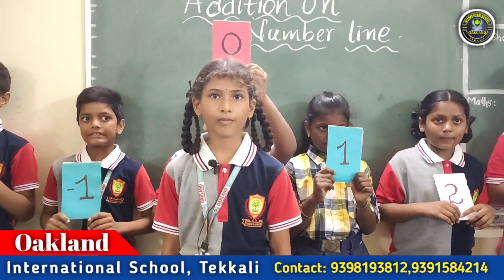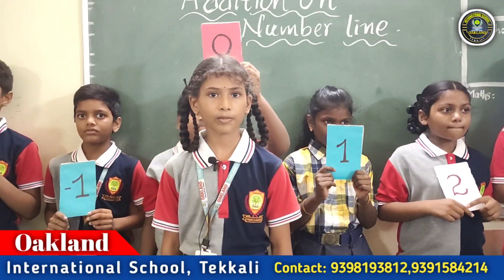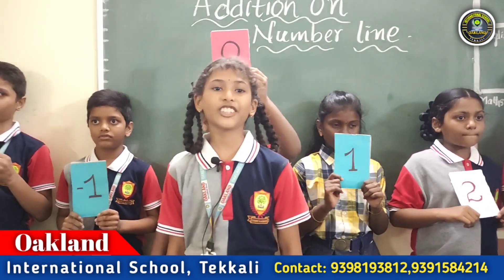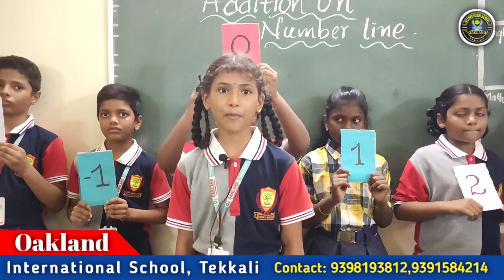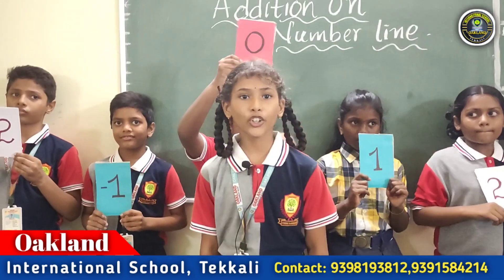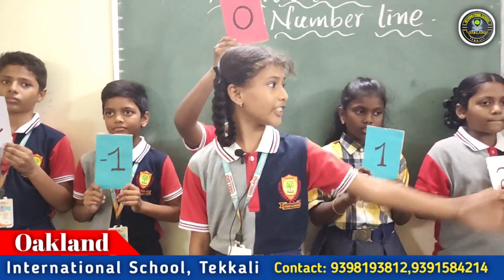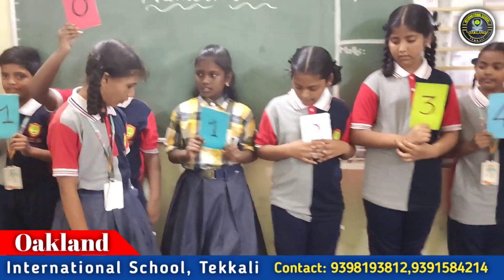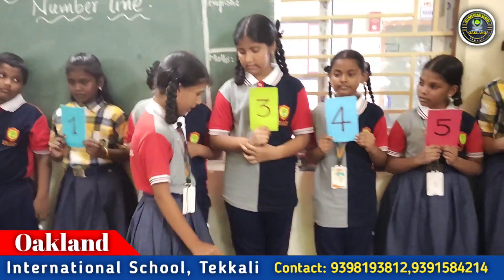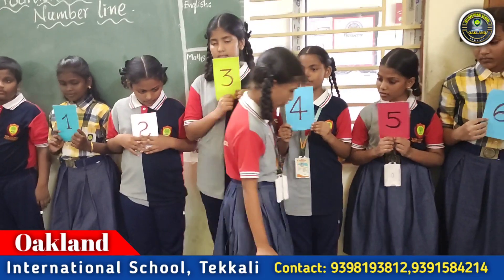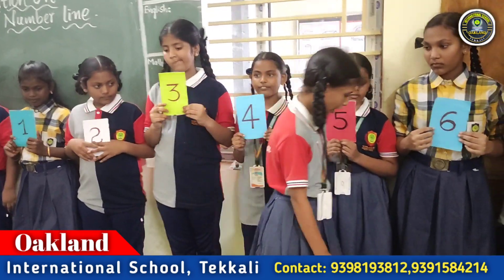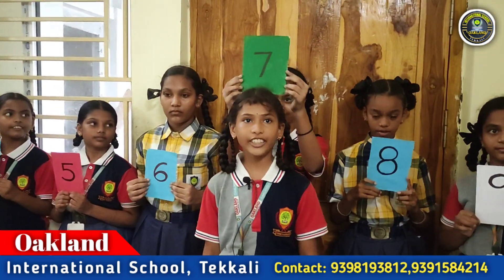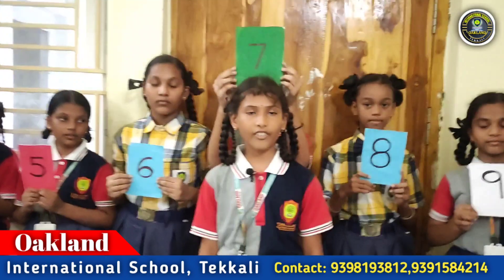Your question is seven plus minus five. Where I am standing, that is zero position. To reach seven, we have to move right side on the number line. One, two, three, four, five, six, seven. Now I reach seven.